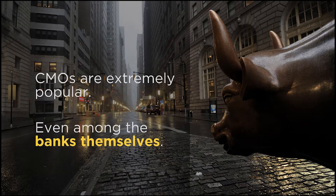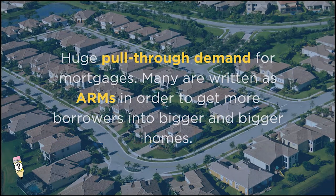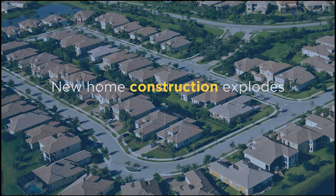CMOs were even popular among the investment banks themselves. These guys were drinking their own Kool-Aid, and many of the investment banks borrowed extensively just to invest in CMOs. As a result, the pull-through demand for mortgages went through the roof. There was more demand than there were credit-worthy borrowers, so even more subprime loans got made. In order to get borrowers into bigger and bigger homes — these were the days of the so-called McMansions — many of these loans were written as adjustable-rate mortgages, or ARMs. Since interest rates were at historic lows, this made monthly payments more affordable, and everybody thought traditional real estate economics would hold even through this type of market manipulation. All this demand caused a construction boom, pulling another sector of the economy into its vortex.